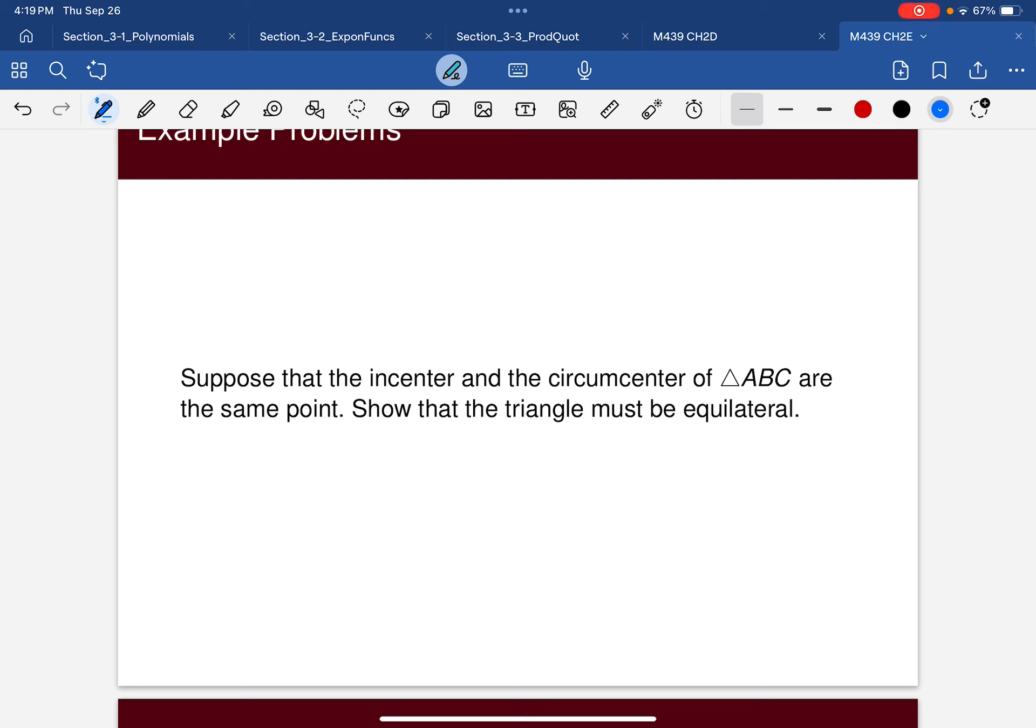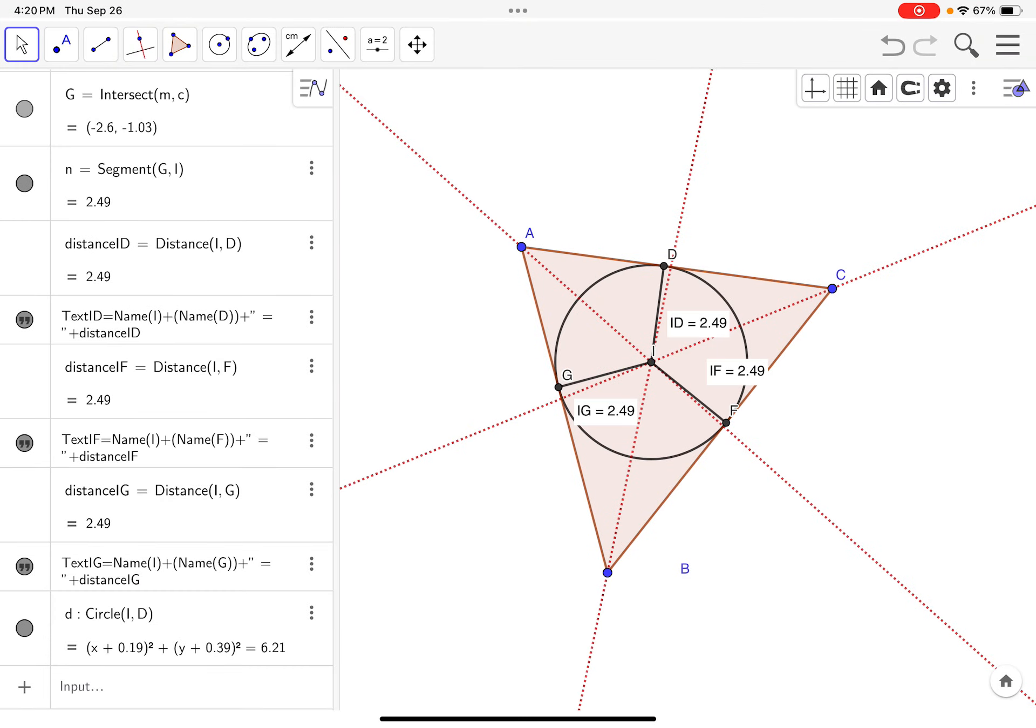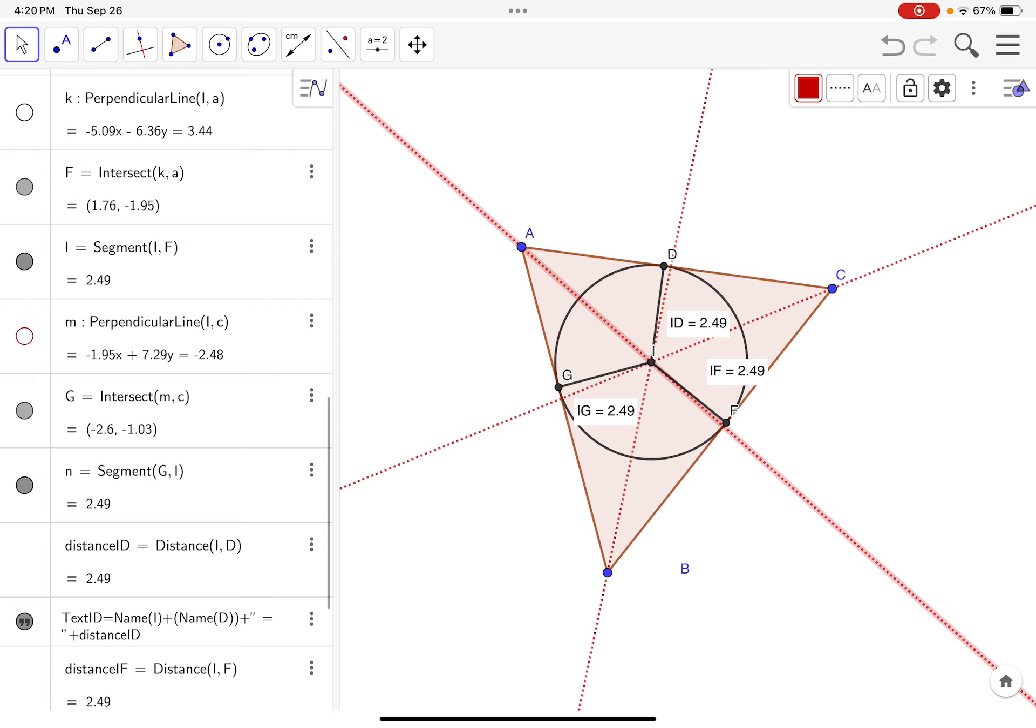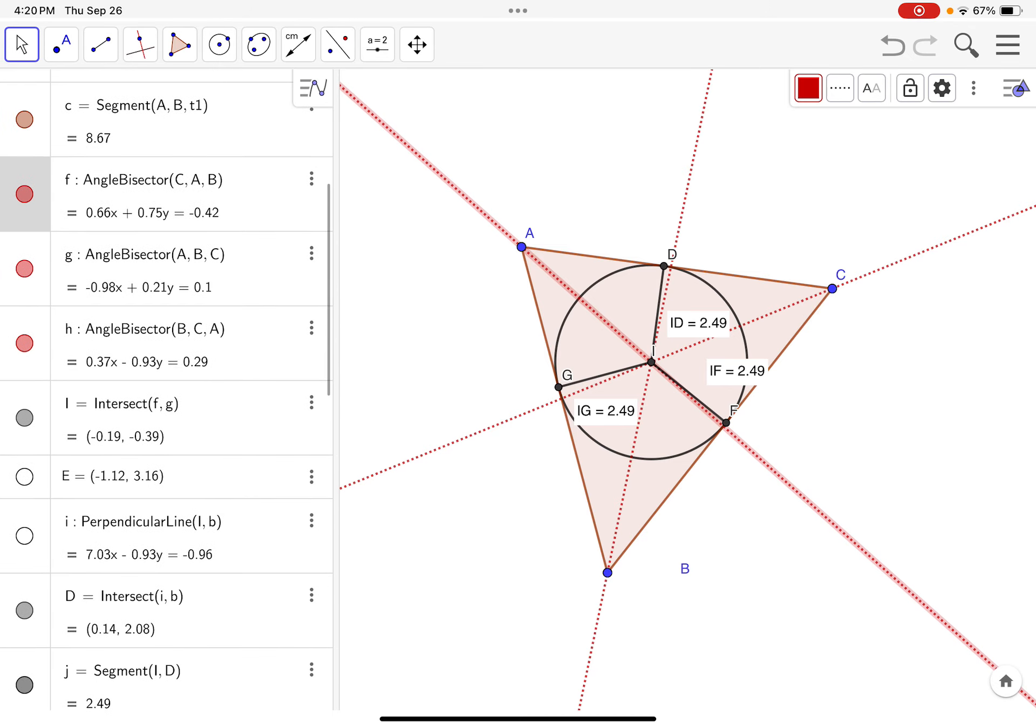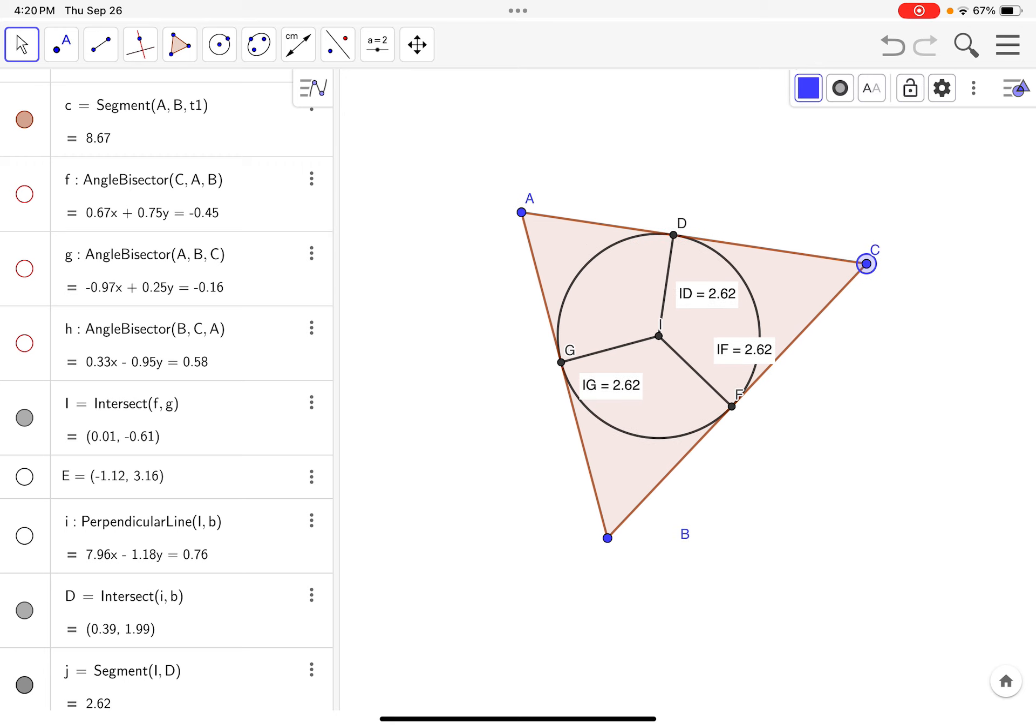This is a good one to investigate in GeoGebra. So again, I'm going to select all here. Well, no, I'm not. I'm actually just going to hide some things. Let's get rid of the angle bisectors. Let's see. So there's the incircle drawn.